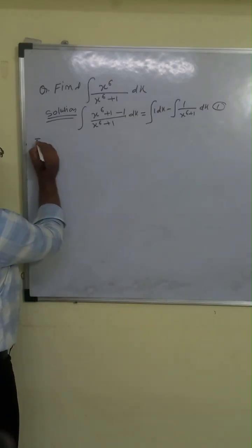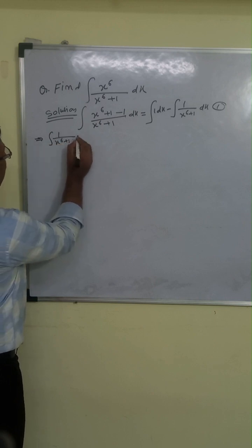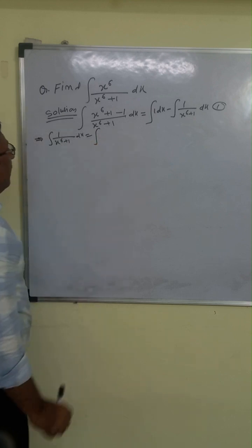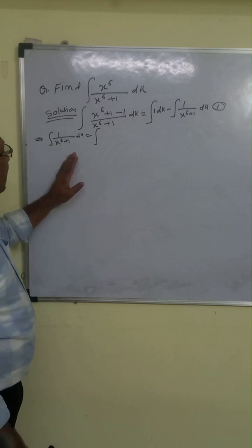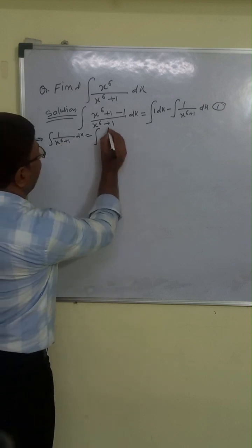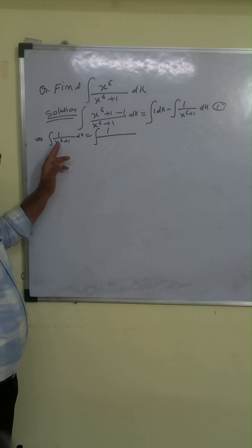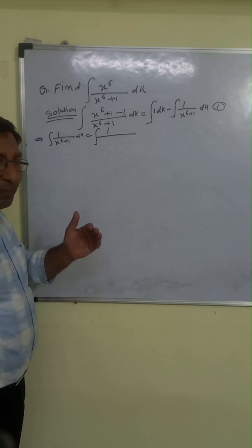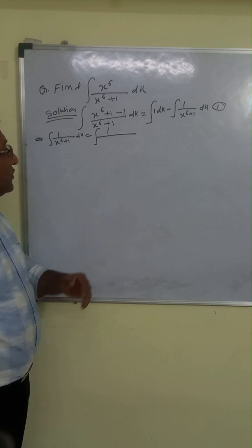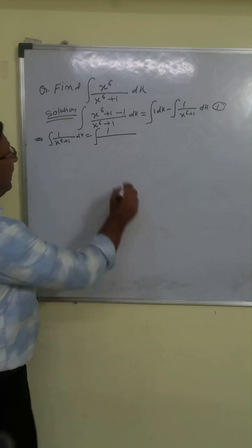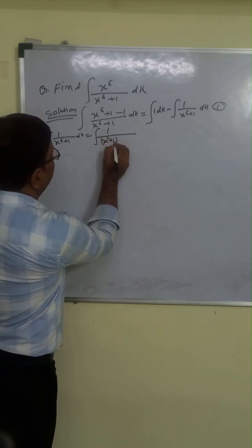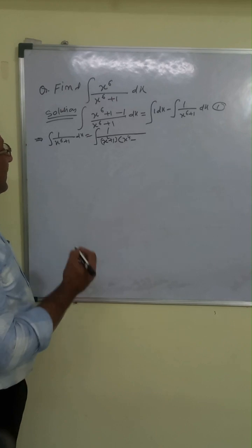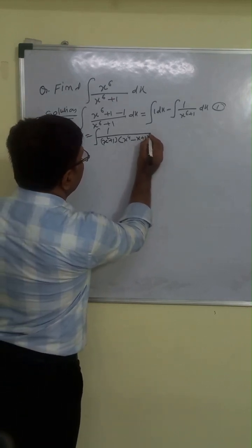Now we are taking integration of 1 upon x to the power 6 plus 1 dx. We can write x⁶ plus 1 as x² cubed plus 1 cubed. The formula a³ plus b³ is a plus b into a² minus ab plus b². Here x⁶ means x² whole cube, so a will be x². So we get x² plus 1 into x⁴ minus x² plus 1.